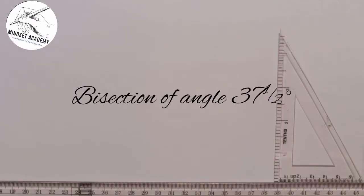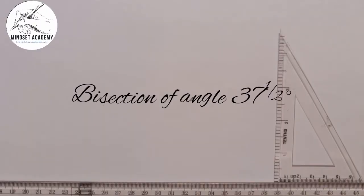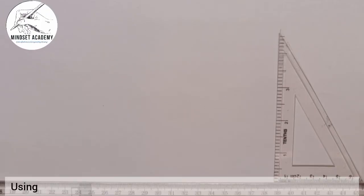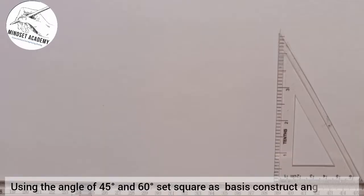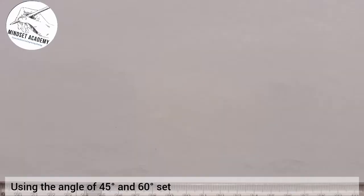Welcome to my channel. In this tutorial, we are told that using the angles of 45-degree and 60-degree set squares as a basis, construct the angle 37.5 degrees by bisection. We are constructing an angle of 7.5 degrees. The first thing you do is draw a line — this point is A and this point is B. Seven and a half lies between two angles: 45 and 30. So you need to construct 45 and 30.